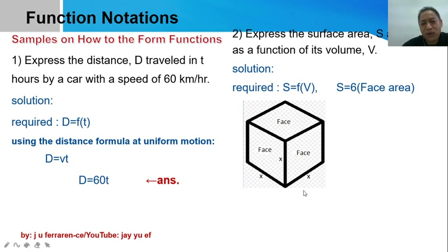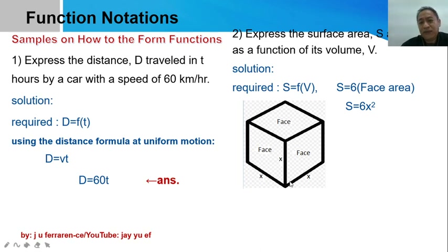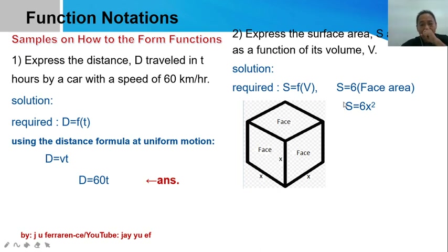What is the area of a face? Considering one face — being a square — the area is x times x, so area equals x squared. Therefore S is equal to 6 times x squared. This is the answer if we need the surface area expressed as a function of the edge x. However, the problem requires it expressed as a function of volume v, not x.